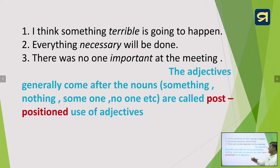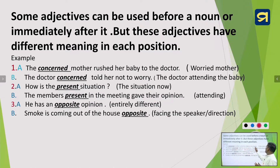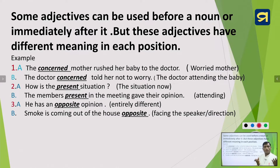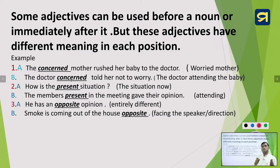Now look at the next slide. Some adjectives can be used before a noun or immediately after it, but these adjectives have different meanings in each position. For example: 'The concerned mother rushed her baby to the doctor.' Here 'concerned' is the adjective used before the noun 'mother' — that is attributive use. Now the second example: 'The doctor concerned told her not to worry.' The same adjective 'concerned' is used after the noun 'doctor.'